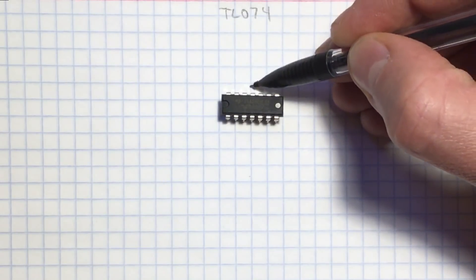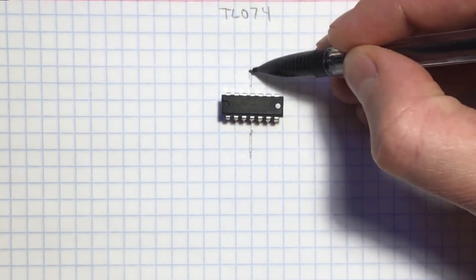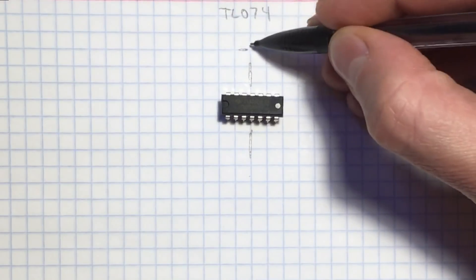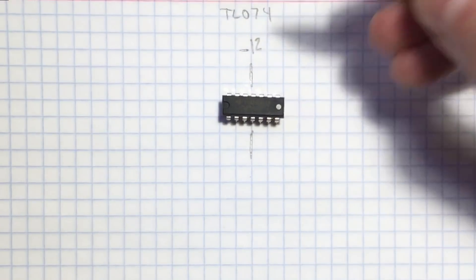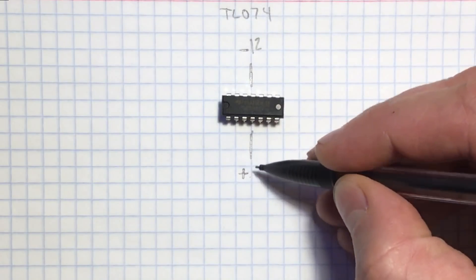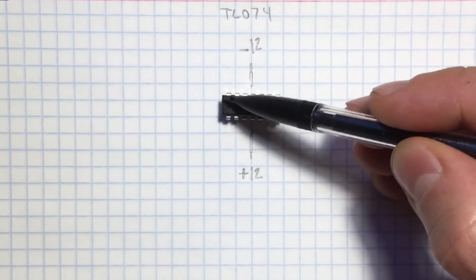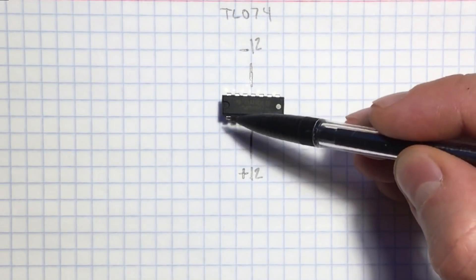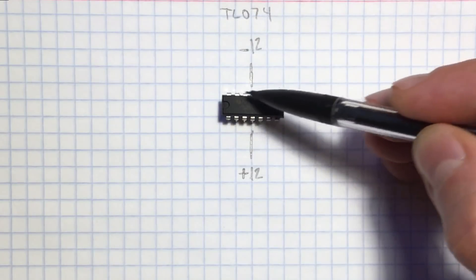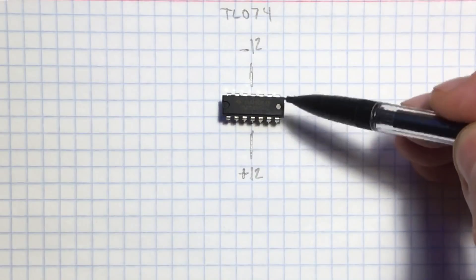The way the pinout is arranged is the center pins are actually the supply pins. So the top one is the negative voltage supply. So for Eurorack you would use negative 12 volts and on the bottom positive 12 volts. The way the pins are numbered start with the little bite here. On the left side of the bite is pin 1 and it goes around the chip. So you have 1, 2, 3, 4, 5, 6, 7,